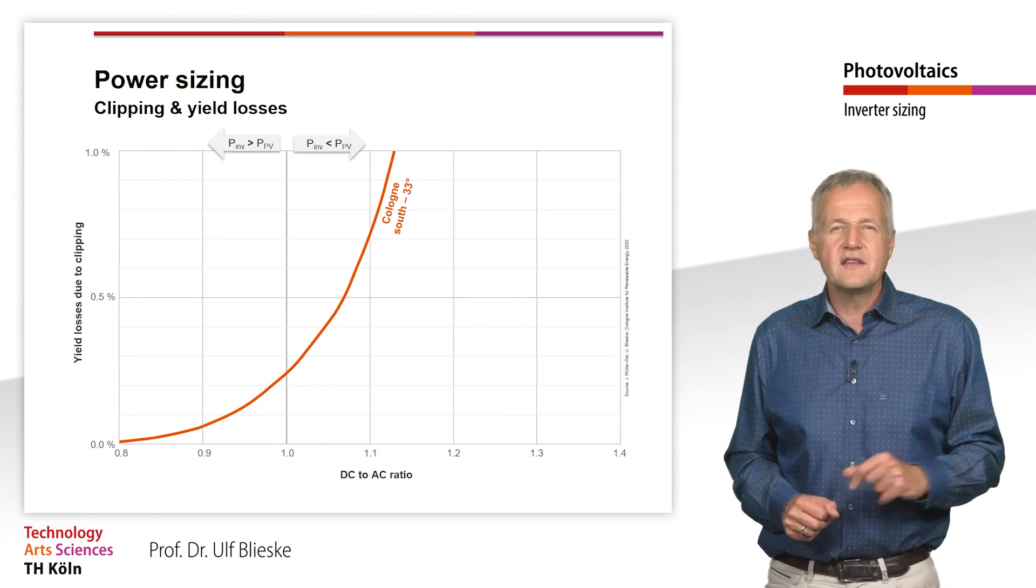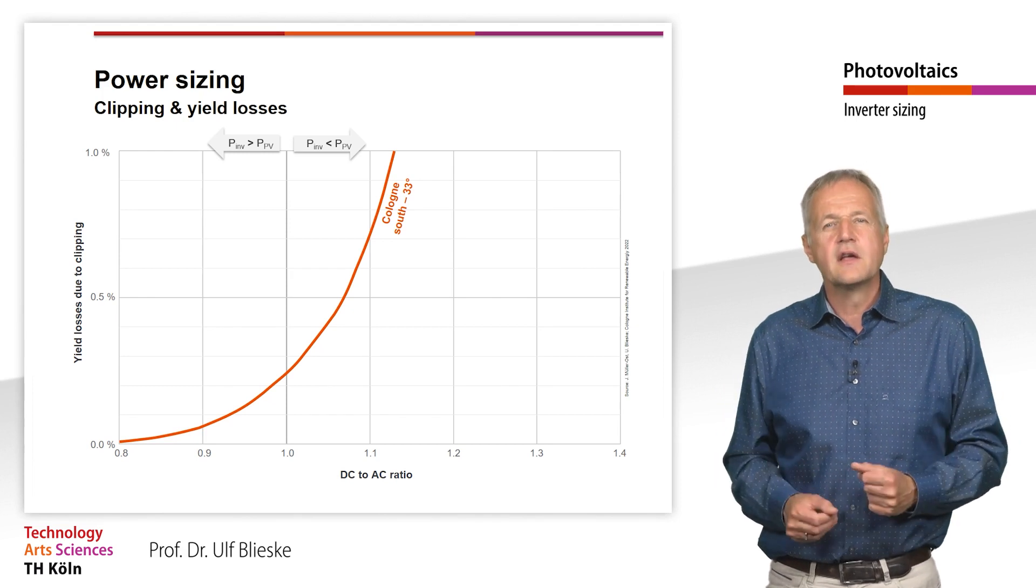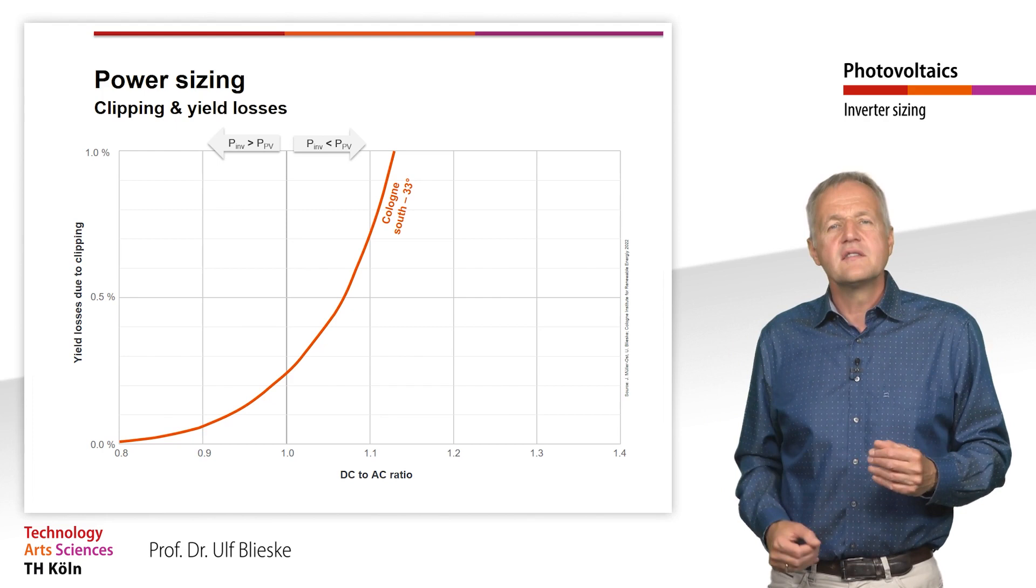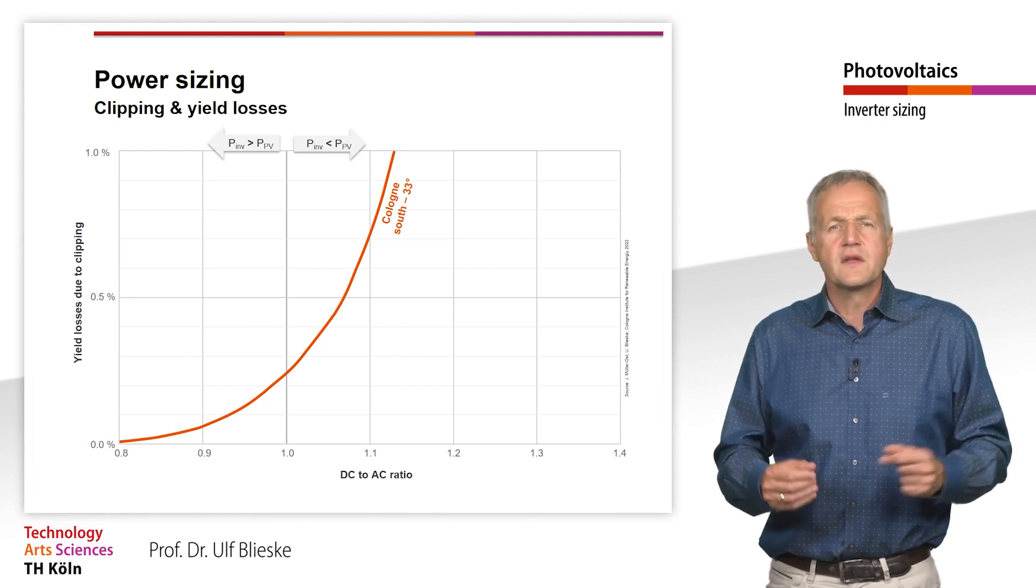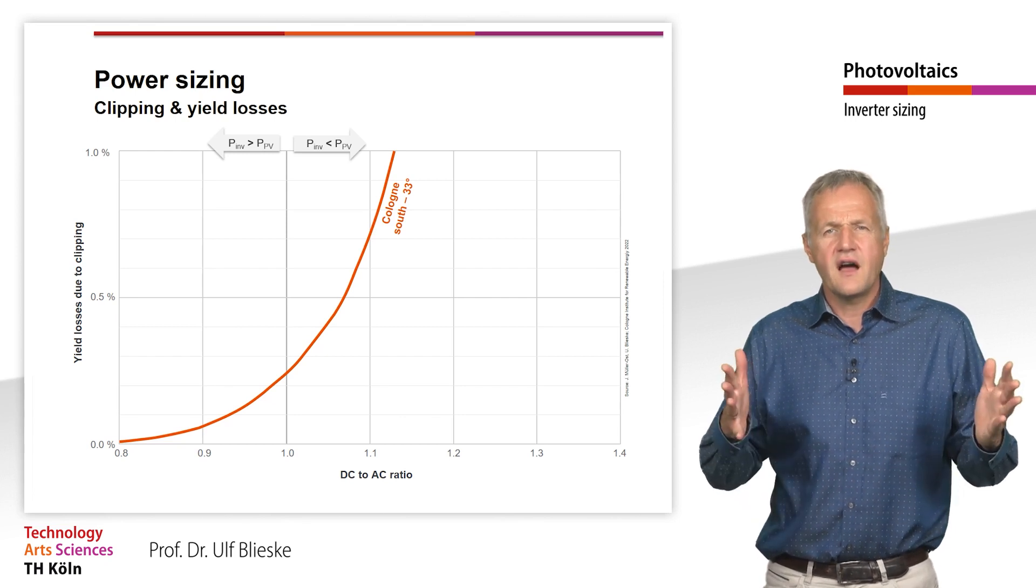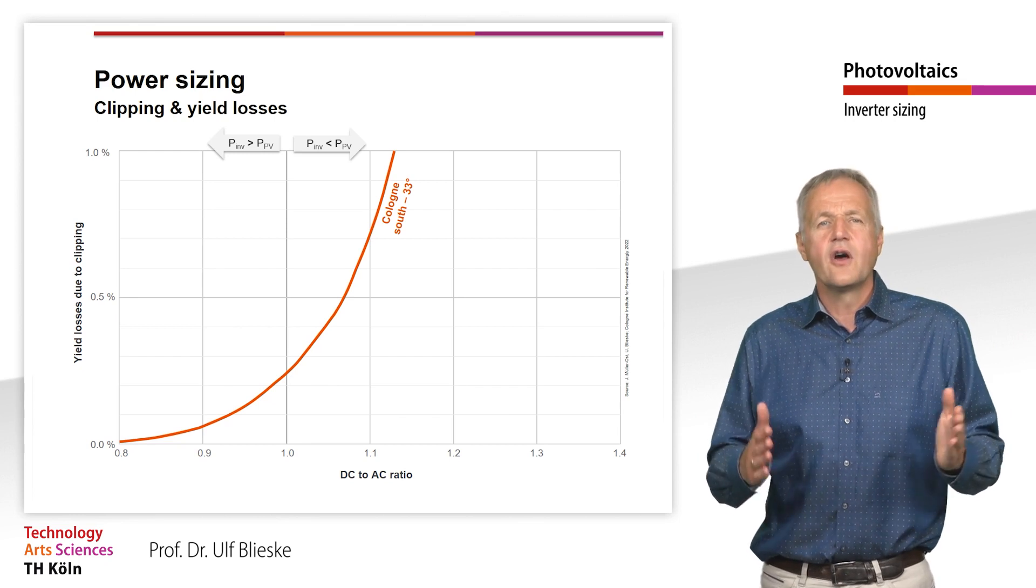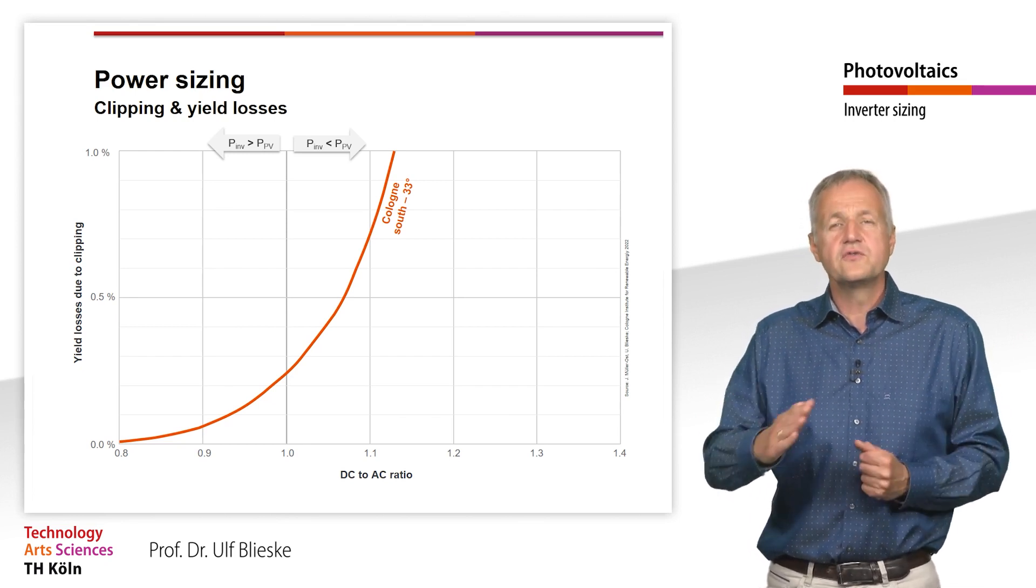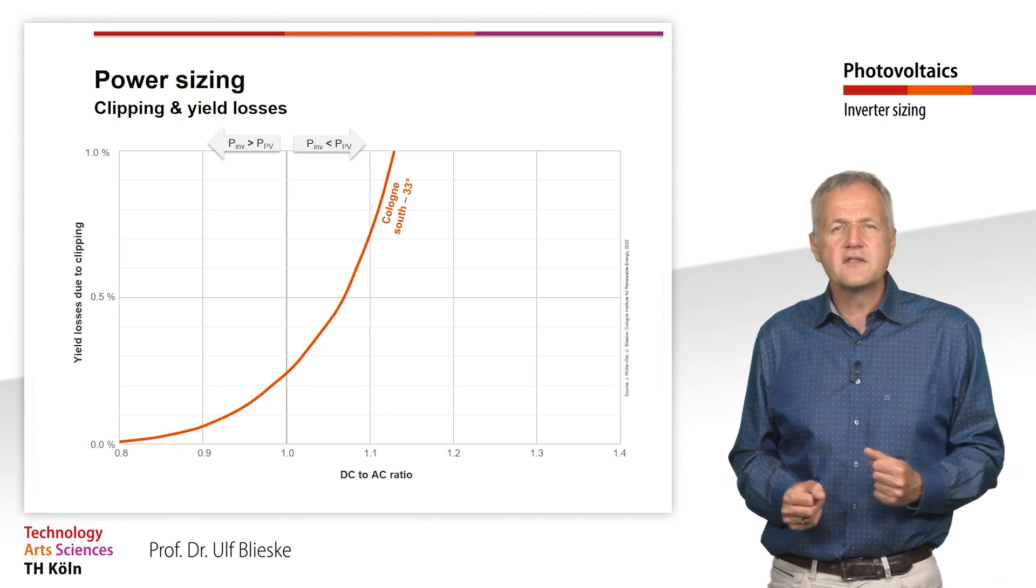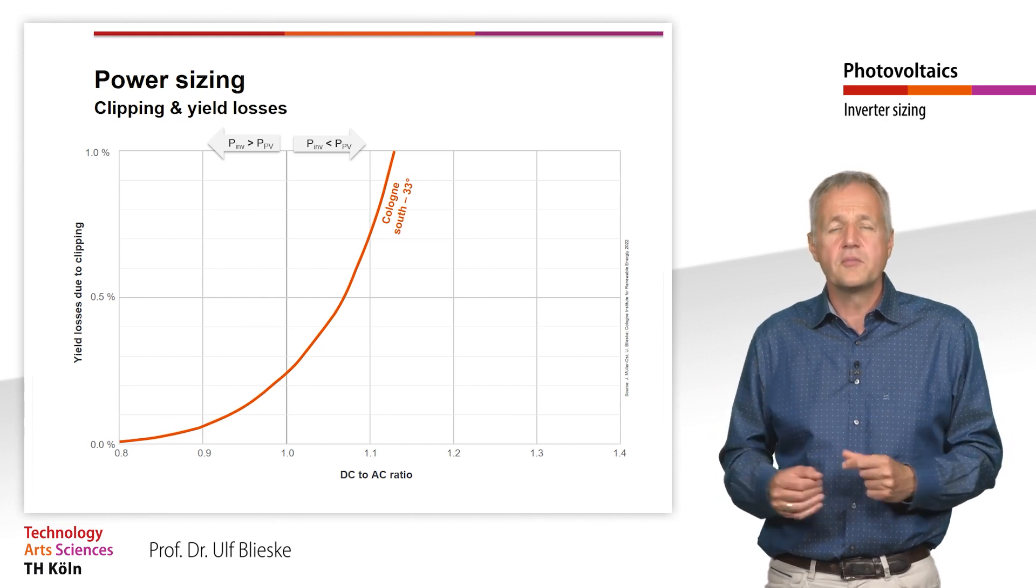Here we plot the yield losses that result from clipping for different DC to AC ratios. We can see that even with a DC to AC ratio of 0.8, meaning a heavily oversized inverter, there is still a little loss due to clipping. The reason for this is that high direct irradiance is most frequently incident on the modules due to the steep tilt. At these irradiance levels, the modules can deliver up to 130% of the nominal power.